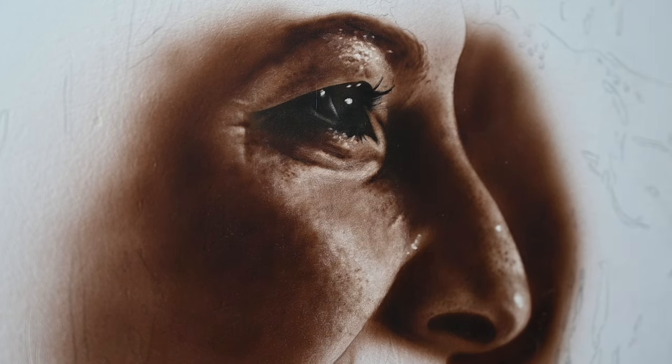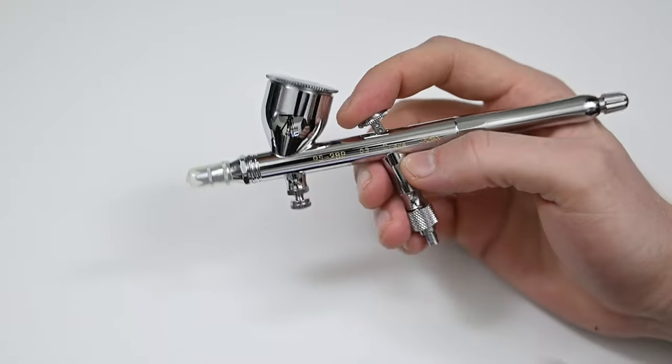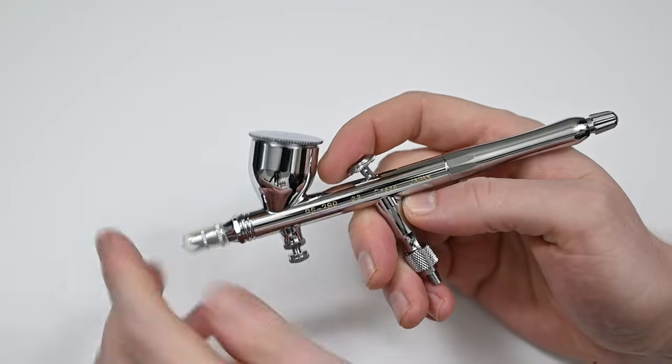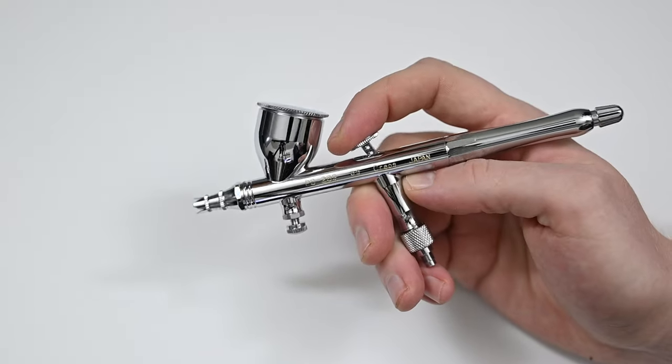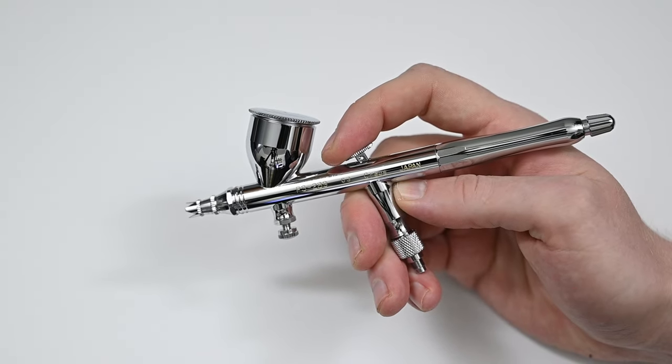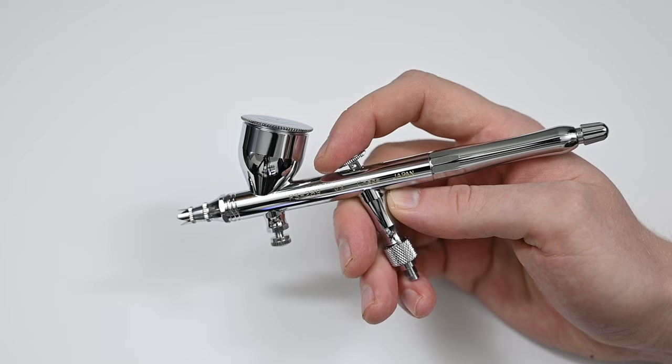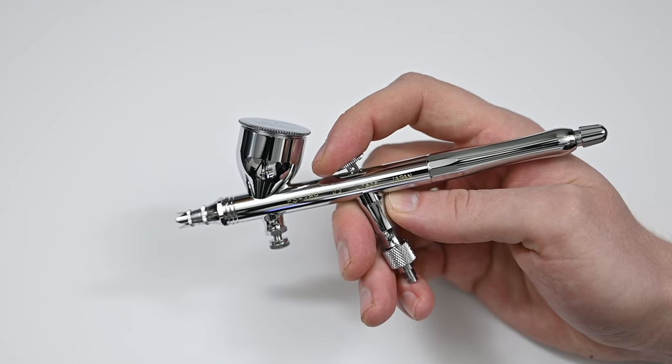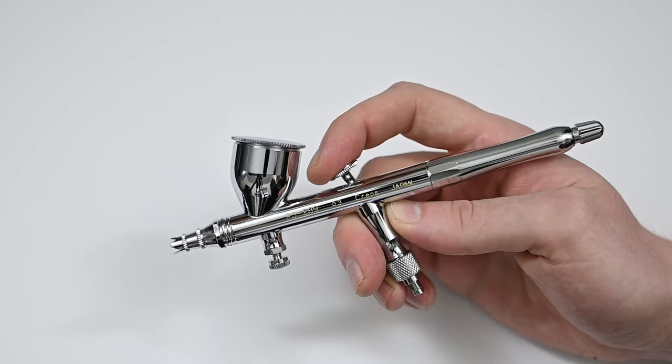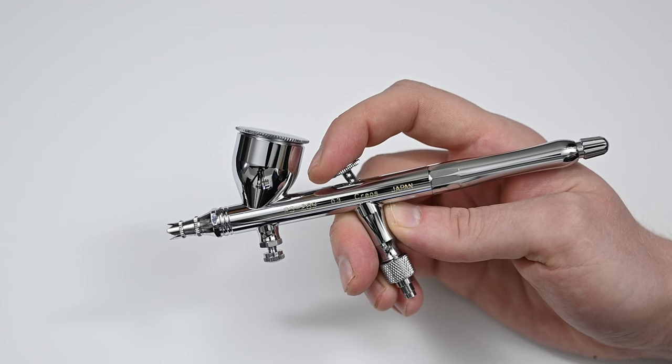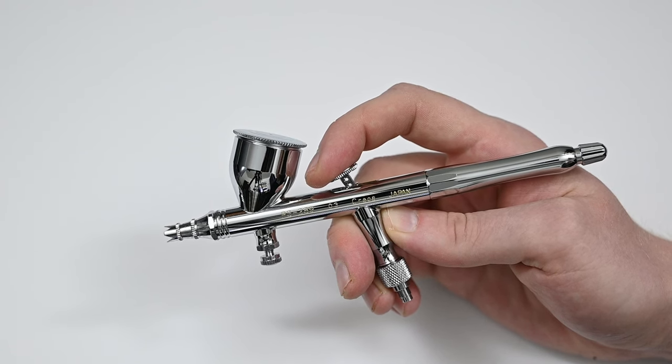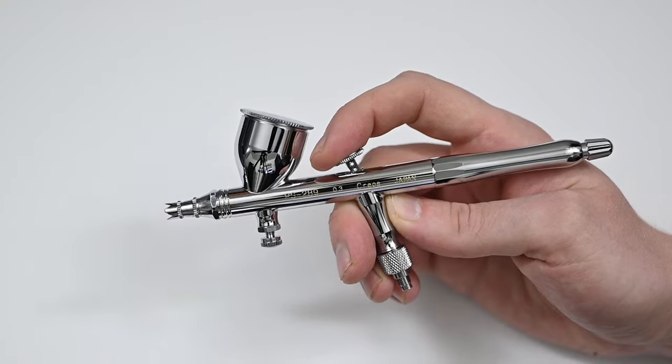The trigger spring on this airbrush, like all other GSI Krios airbrushes I've tested, is very, very soft. Even when it's tightened down all the way, there's not that much tension on it. And I think a lot of people will really like this. Personally, I prefer some more tension on the trigger because I feel like I have more control. But a softer trigger is probably better for you in the long run because it's less fatiguing on the finger. So compared to other airbrush brands, this trigger is definitely designed to be softer and lighter.